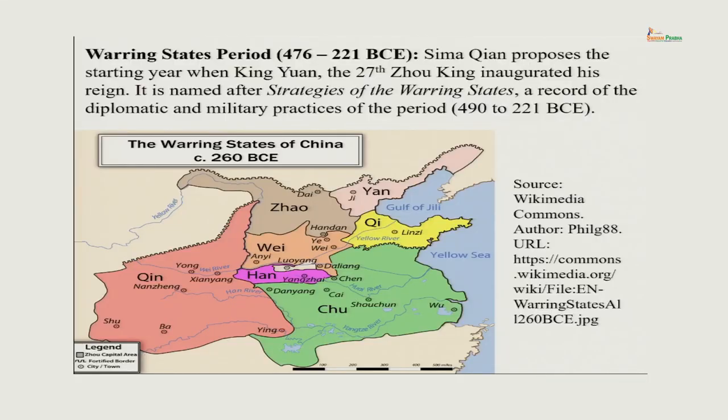The next period, the Warring States period, was even more productive because these autonomous rulers gradually created kingdoms of their own. Some of them took the titles of kings — earlier they held the title of dukes, meaning nominally they were under the Zhou king. By the year 260 BCE, we have 7 main states: Chin, Chao, Wei, Han, Chu, Chi, and Yan.